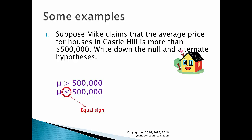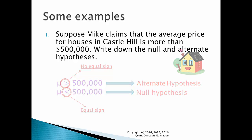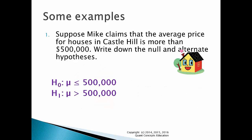Now, here is the equal sign, so this claim must be the null hypothesis. Remember, the null hypothesis is a claim with the equal sign. The first claim has no equal sign, so this must be the alternate hypothesis. Now let's set this up properly. We write down H0 and H1, and the null and alternate hypotheses in that order.